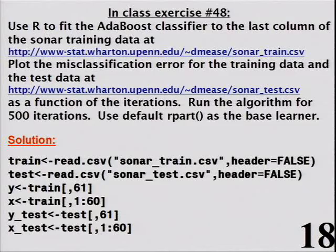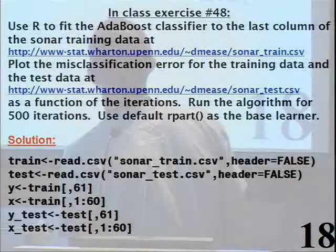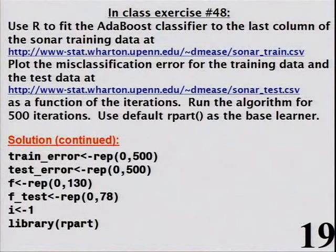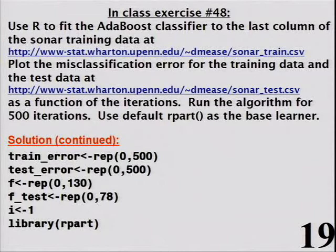Here I implement it on the sonar data: train on training data, see how well it does on test data. I initialize training error and test error vectors for 500 iterations, initialize f and f_test as vectors of zeros (130 training points, 78 test points), and load the rpart library since I'll use default rpart as the base learner.